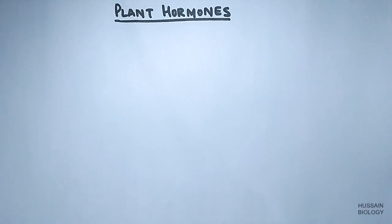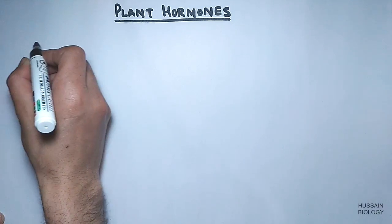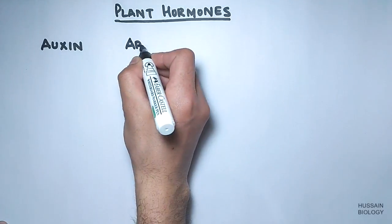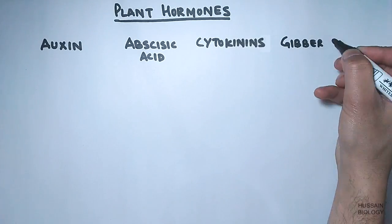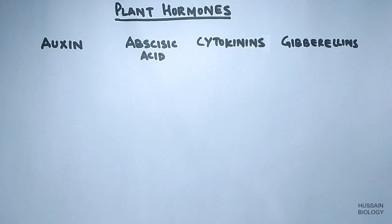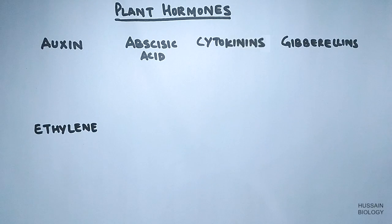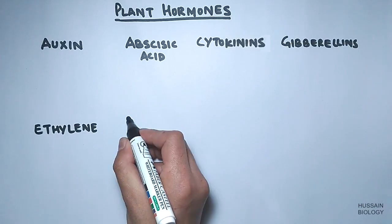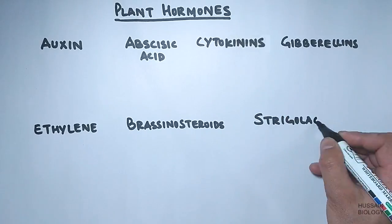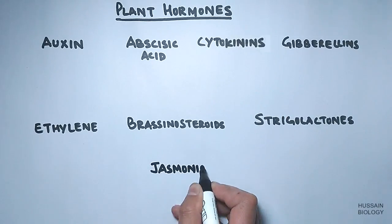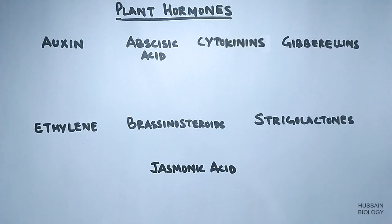The following are the hormones produced by plants: Auxins, abscisic acid, cytokinins, gibberellins, and ethylene. Generally we study these major hormones of the plant, but there are other hormones also — like brassinosteroids, strigolactones, and jasmonic acid from jasmonates.